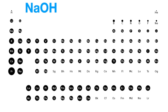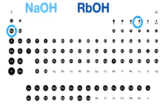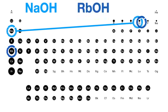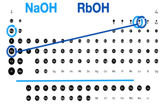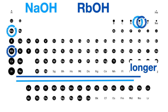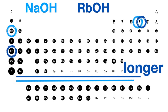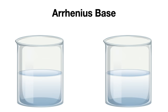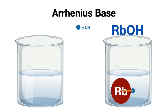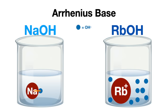The same can be done when comparing Arrhenius bases. Simply compare the distances between each of the atoms in each of the compounds on the periodic table, determine which one is longer, and consider that the stronger base. In this case, the line between the rubidium and the oxygen of the hydroxide is longer, making rubidium hydroxide stronger — longer and stronger, as they say. This means that rubidium, with the larger atomic radius due to its lower electronegativity, will more likely break the bond to the hydroxide, releasing more hydroxide in solution, making it a stronger base.